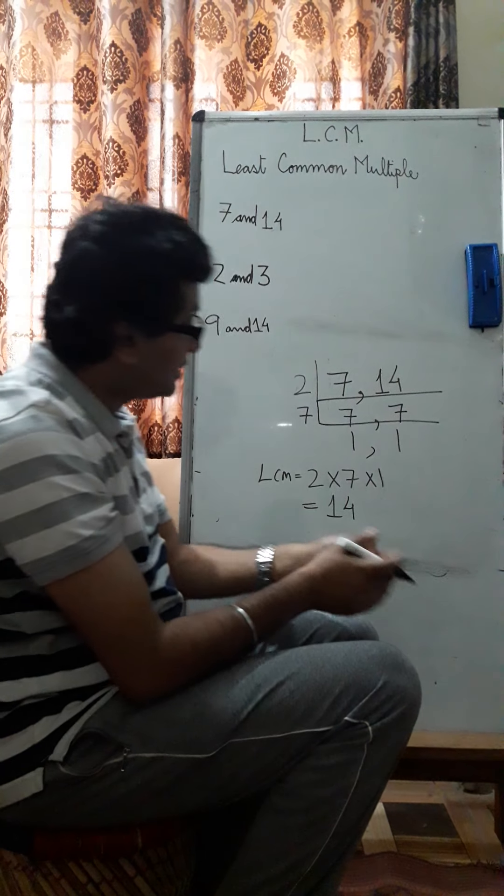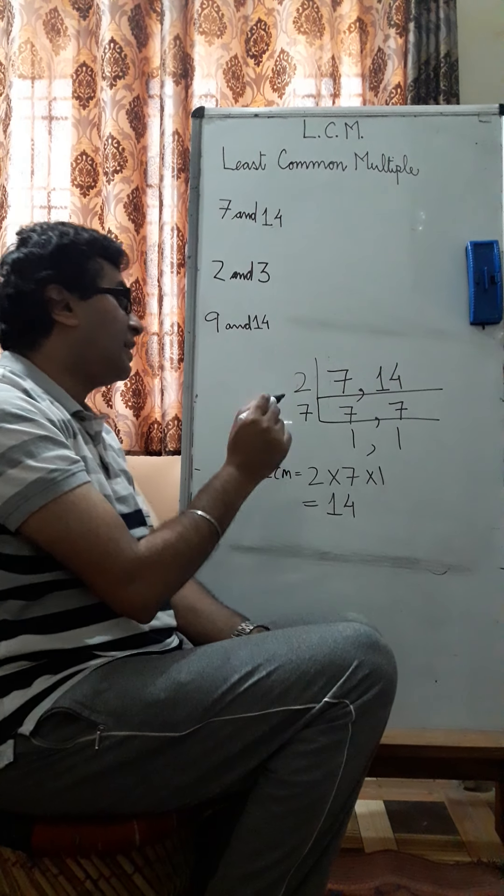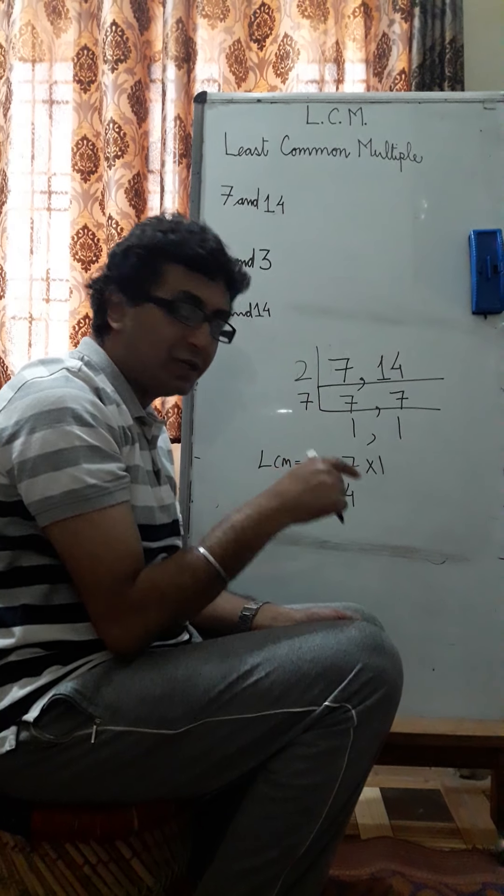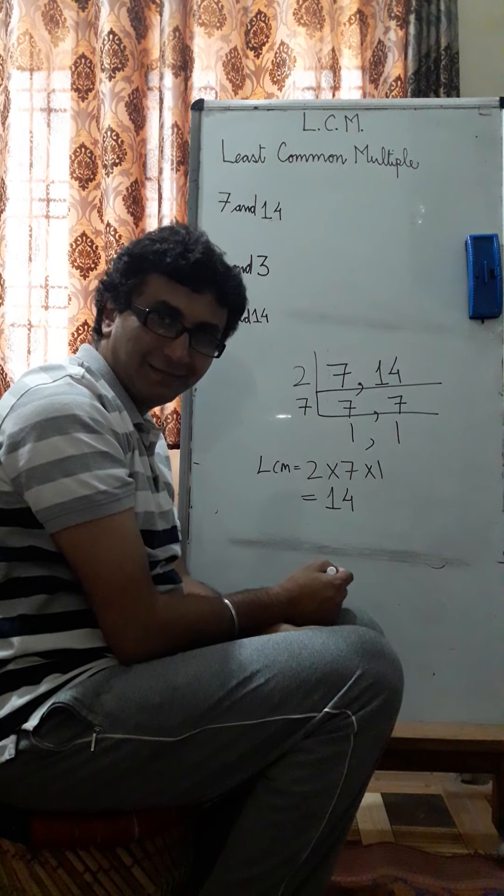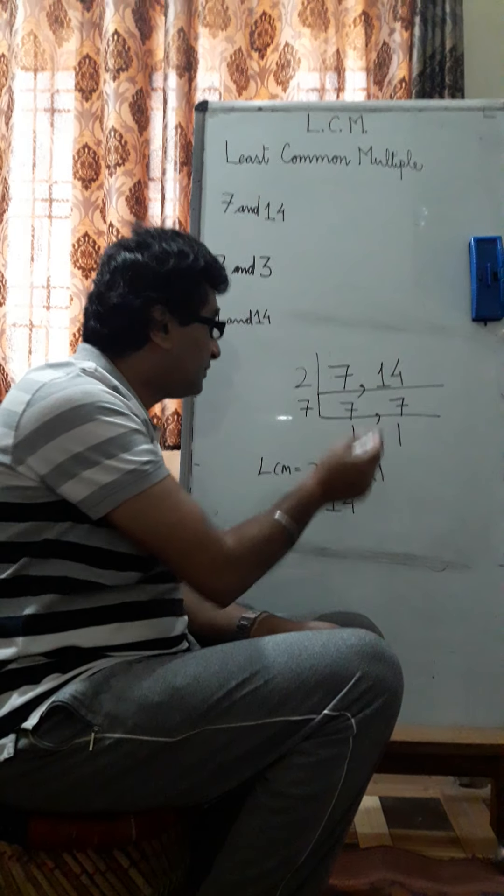Now some of the students, they make a mistake. They make a mistake where they are asked to find the LCM, they try to multiply both the numbers. If you multiply 14 into 7, you will not get 14. That will give you some other result. So please remember, you cannot do that.